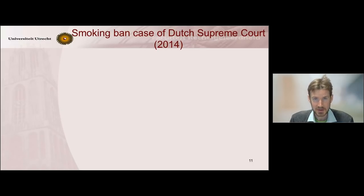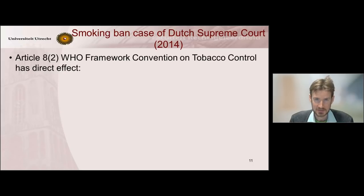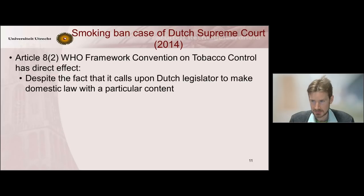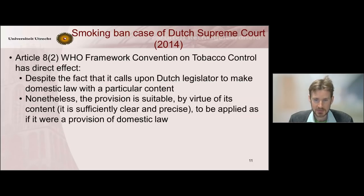So again, this society directly invoked an international provision — this time Article 8, paragraph 2 of the Tobacco Framework Convention — before the Dutch judge, raising a question of direct effect and invocability. Interestingly, the court did not exactly apply the same criteria it had developed in the 1986 railway strike case. In 2014, the Dutch Supreme Court held that Article 8.2 had direct effect, despite the fact that it called upon the Dutch legislator to make domestic law with a particular content. But the provision was suitable by virtue of its content to be applied as if it were a provision of domestic law.